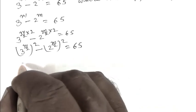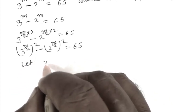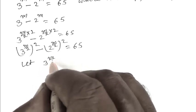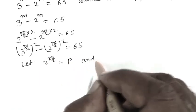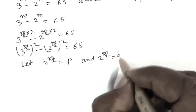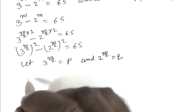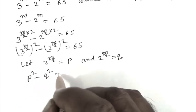Let 3 to the power m by 2 equal p, and 2 to the power m upon 2 equal q. Putting this value, we get p squared minus q squared equals 65.